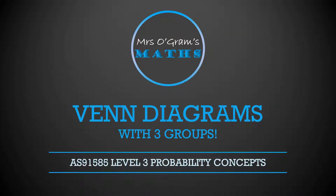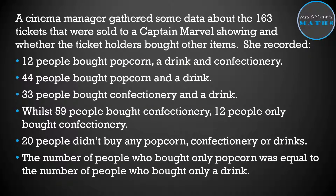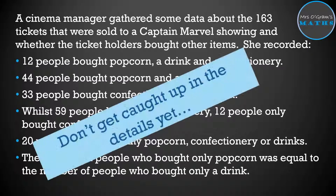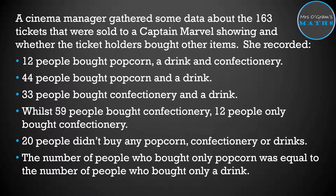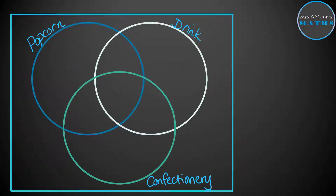We're taking a look at doing Venn diagrams that involve three categories. You've just got to be pretty careful about the information you're given and put it in one piece at a time. We're going to look at a question about a cinema manager who got data about 163 tickets sold to a showing of Captain Marvel, and whether buyers bought popcorn, drink, and confectionery. We start with a diagram with three circles for popcorn, drink, and confectionery.